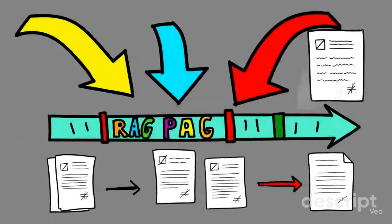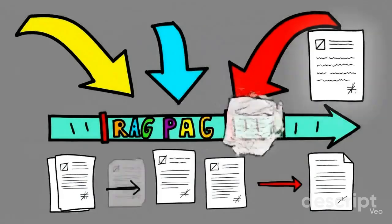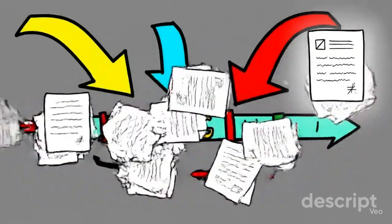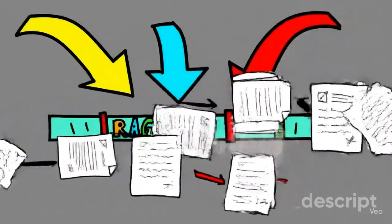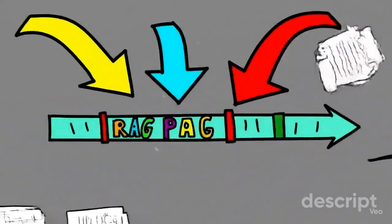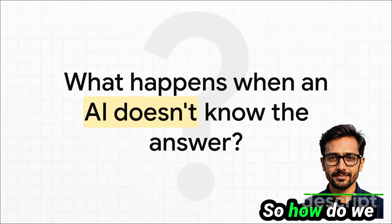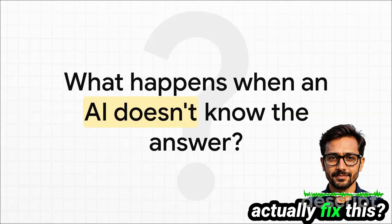Recent news? Forget about it. And they have absolutely no clue about private internal information like your company's product manuals or a specific customer's history. So how do we actually fix this?